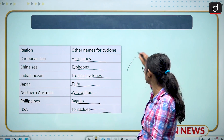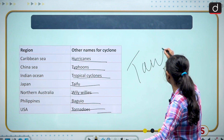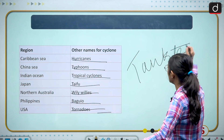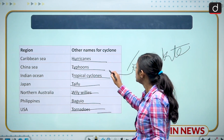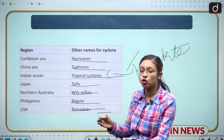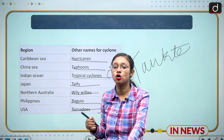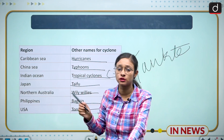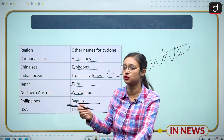Recently Tokte arrived in India, which is an example of a tropical cyclone. In the comment section, you have to answer which part — which state — of the country Tokte hit.